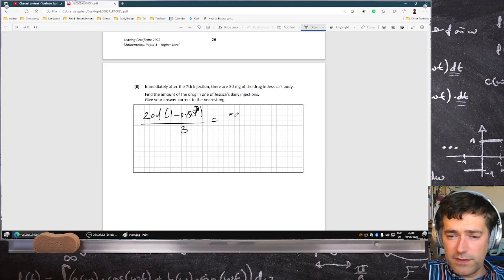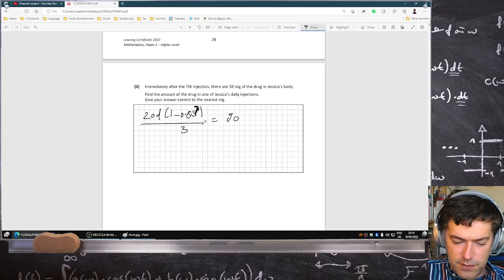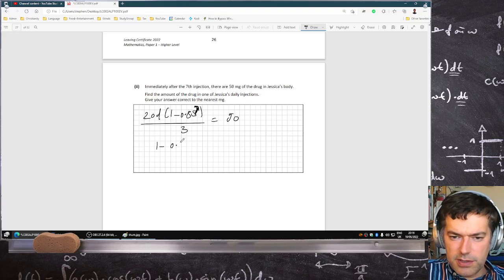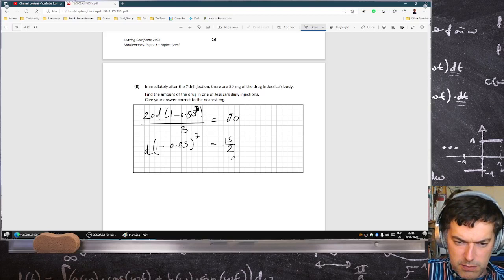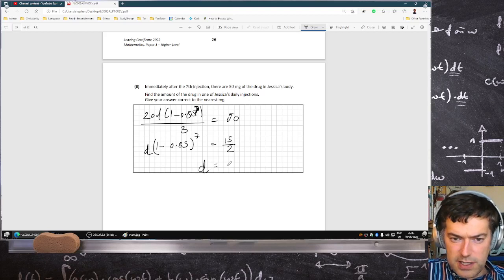So 50 times 3 divided by 20. We get 1 minus 0.85 power 7 times D is equal to 15 over 2 divided by 1 minus 0.85 power 7. So I get D is reasonable to the nearest milligram, 11 milligrams.